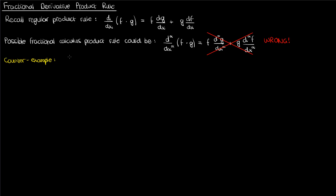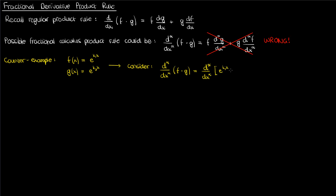Suppose I have two functions. The first is the exponential of k1 times x and the second is the exponential of k2 times x, where k1 and k2 are just real constants. If I take the fractional derivative of order alpha of the product of these functions, that's the same as combining the exponentials and taking the fractional derivative of that quantity, and doing so brings k1 plus k2 down with the exponent alpha while the exponential remains.